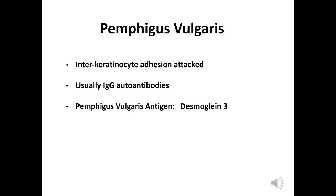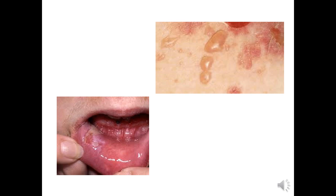Pemphigus vulgaris is an interkeratinocyte adhesion defect. It is caused by IgG-type autoantibodies, and the part of the desmosome attacked is desmoglein-3. On examination, we may see only erosions in the oral cavity, and on the skin also just erosions. Blisters are rarely seen because they are very superficial, very flaccid, and easy to rupture, so by the time the patient comes to us we see only erosions.